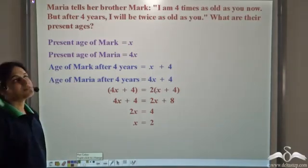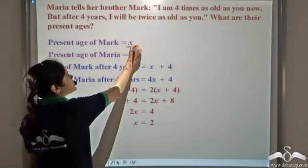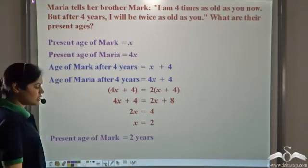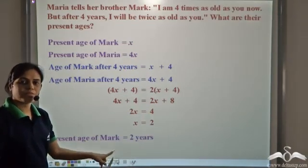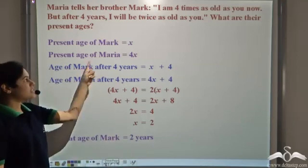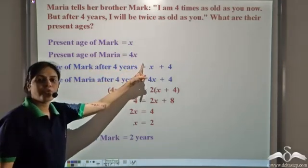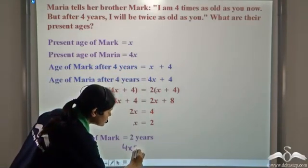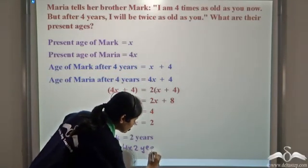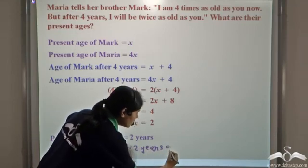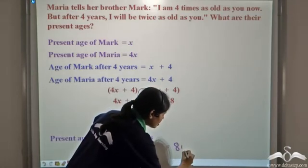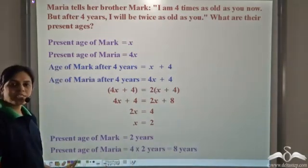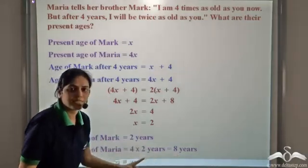Since x is the present age of Mark, the present age of Mark is 2 years. The present age of Maria is 4 times x, that is 4 into 2, which equals 8 years. So the present age of Maria is 8 years.